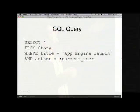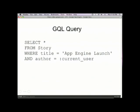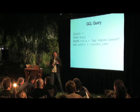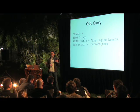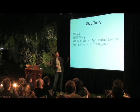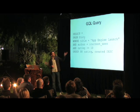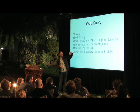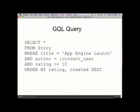Here with GQL, I've done a pretty simple query off that same story class. I've said: select from stories where the title is 'App Engine Launch' — which is happening right now — and the author is the current user, passed in as a keyword argument when constructing the query. That's a pretty simple query, but you can do considerably more advanced queries — for example, asking for objects with a rating over 10, and requesting results sorted by rating and creation timestamp even though it wasn't in the original query.